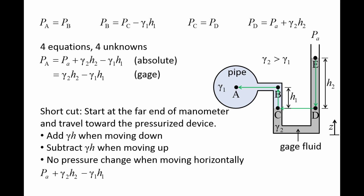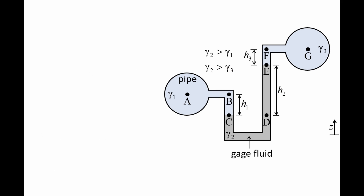Now that we have reached our destination, we can set the entire left side equal to the pressure at point A. Notice that we obtain the same equation as when we solved the set of four equations above. The U-tube manometer also can be attached to another device instead of being exposed to the ambient environment. Here we connect the end of the tube to another device, perhaps a different pipe or a different section of the same pipe.